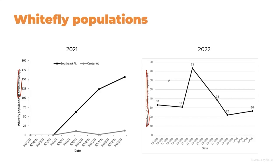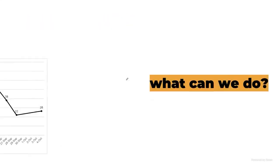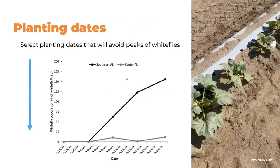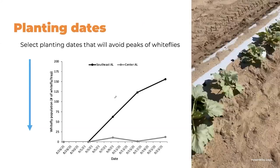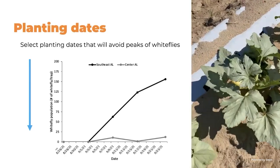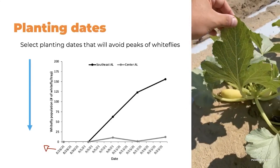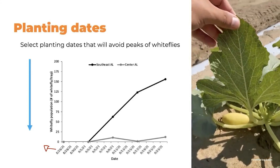Selecting the best planting date is the first management action. As we can see, there was a peak of whiteflies in mid-September in both 2021 and 2022. If you are in south Alabama, avoiding that planting window is the first step to minimize crop loss. In 2021, planting before August 25th would have allowed you to avoid those peak populations.